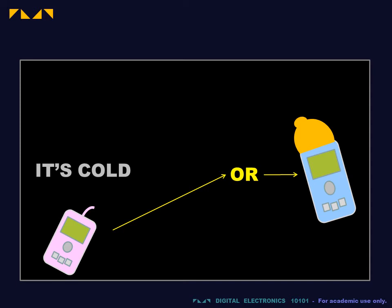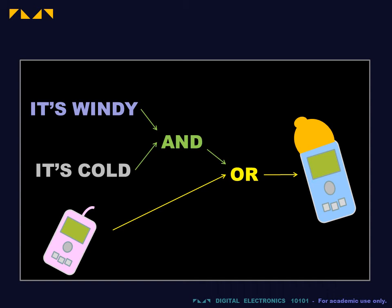Thinking again, Four realizes that he doesn't mind the cold if it is not windy. So he revises his first criterion to: it's cold and it's windy.